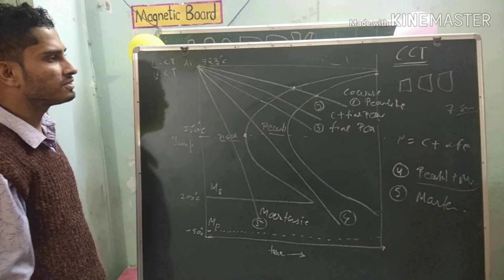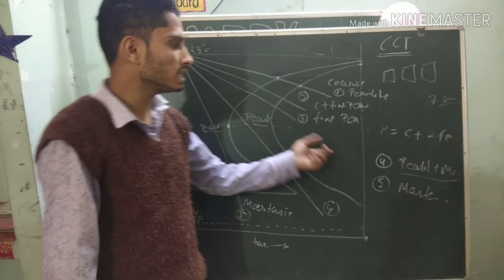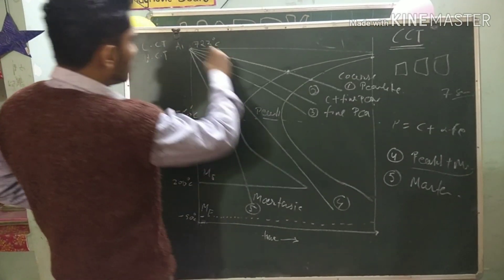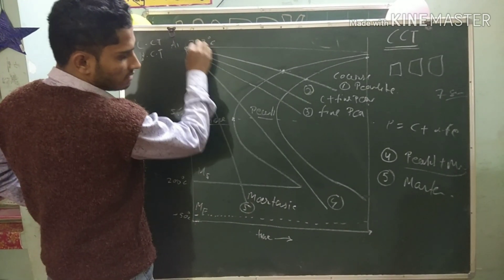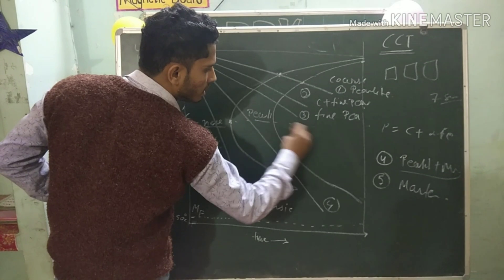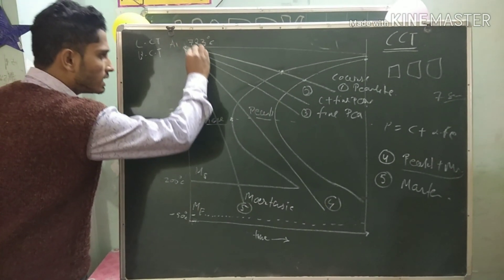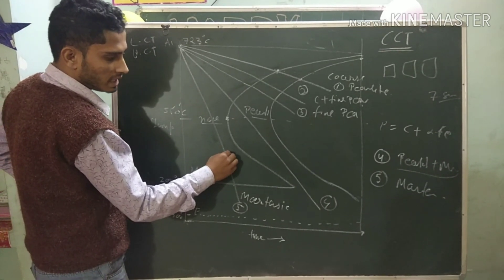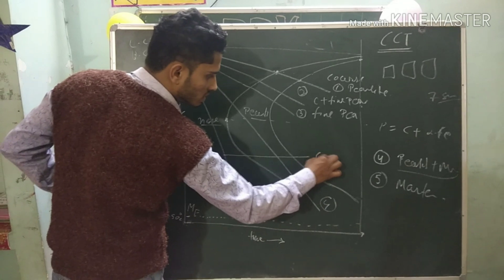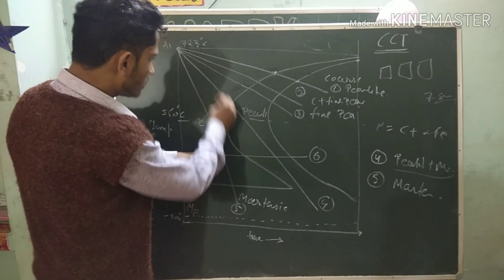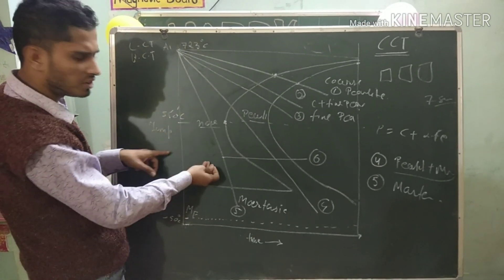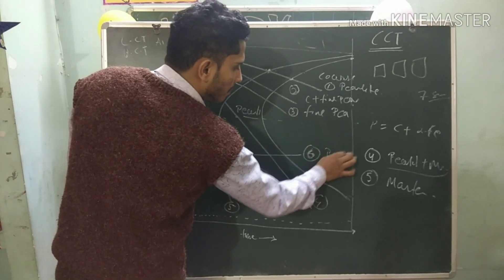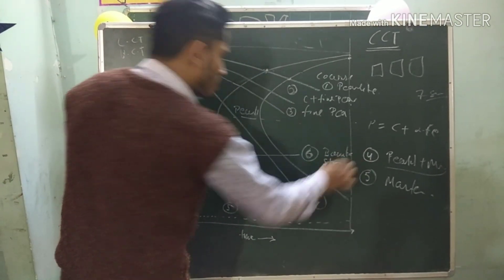In the TTT curve we have seen bainite transformation. But here in the CCT curve it is not possible to make bainite from continuous cooling. It is because at intermediate cooling rate the steel does not stay in the bainite region — it passes through. To get bainite, you have to do drastic quenching from just below the austenitizing temperature and then maintain the temperature isothermally, and then it will form bainite structure. Bainite structure is of two types: sorbite and troostite, known as upper bainite, with a needle-type or acicular bainite structure.